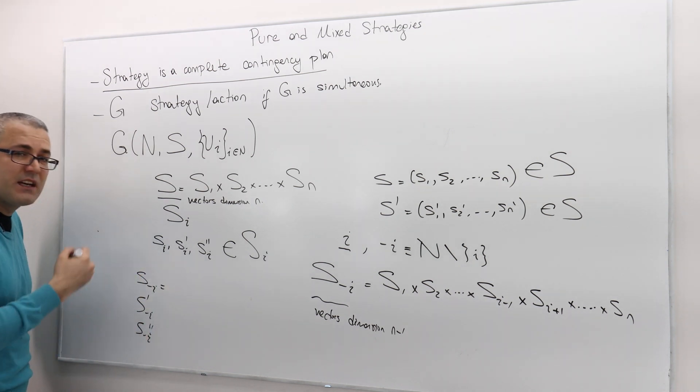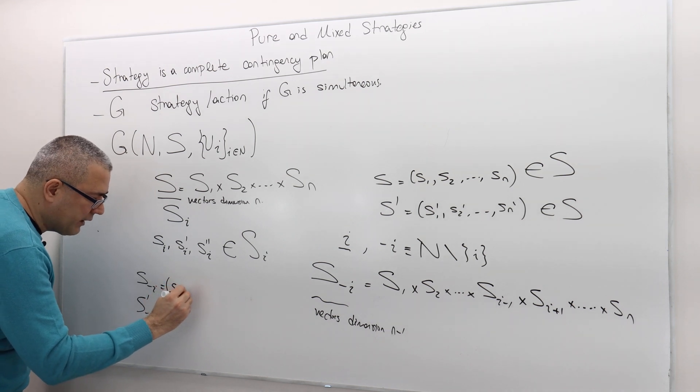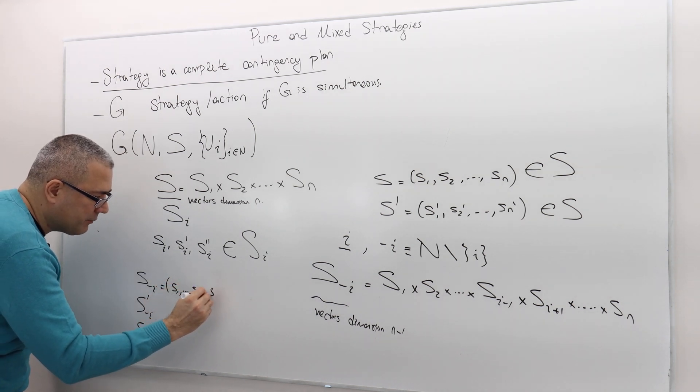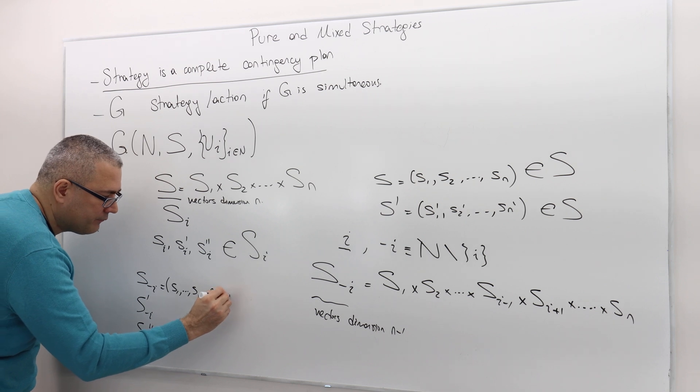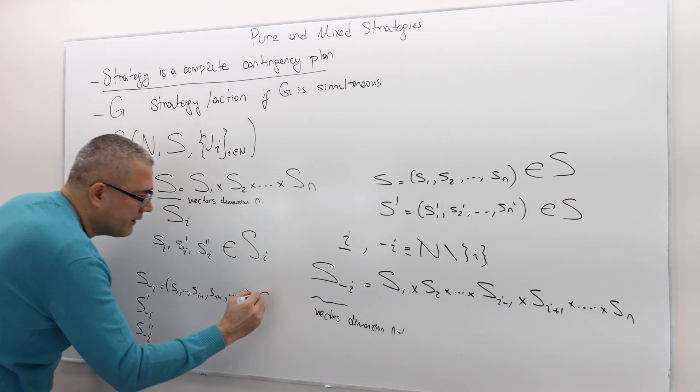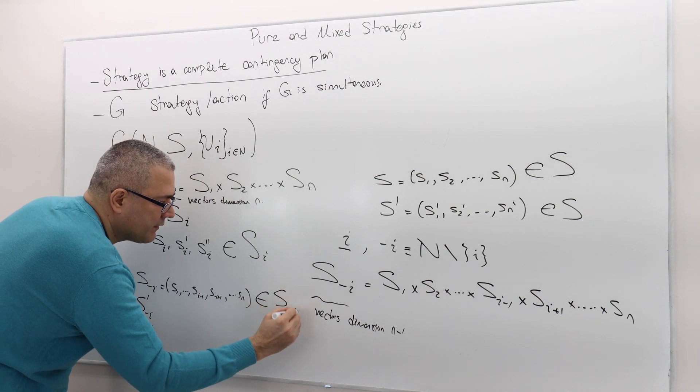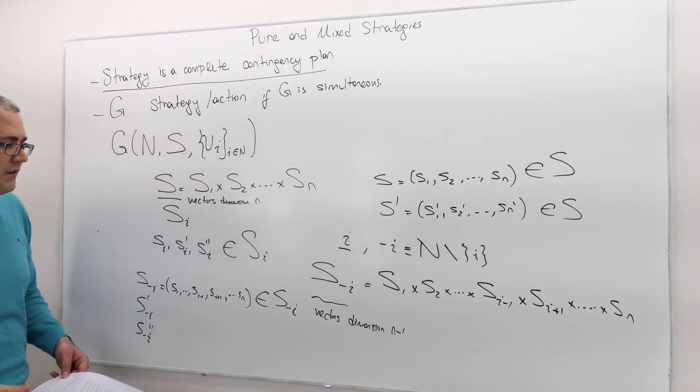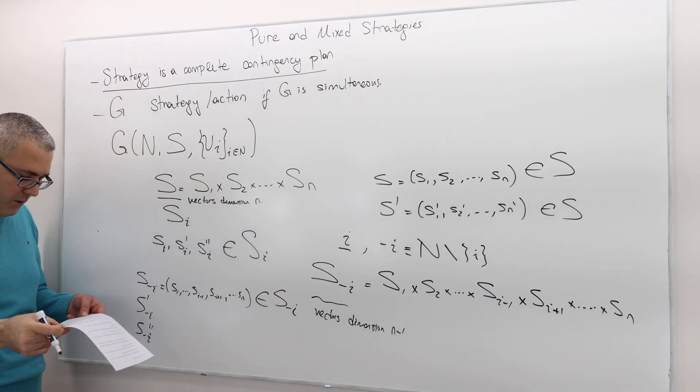And don't forget, these are strategy profiles of all the players except player I. I'm not going to write them, but these are standard elements in S sub minus I.